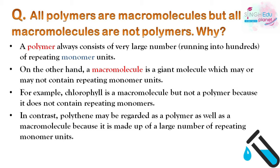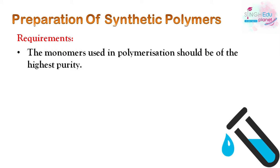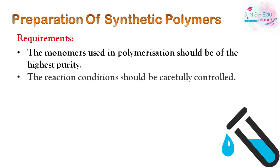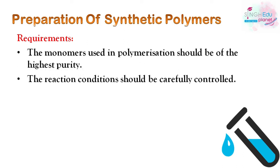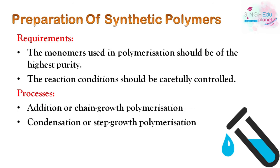Let's begin with the next topic — preparation of synthetic polymers. The monomers used in polymerization should be of very high purity, and side reactions and conditions should be carefully controlled. The two processes are: addition or chain growth polymerization, which we will discuss in this video, and condensation or step growth polymerization, which will be discussed in the next video.